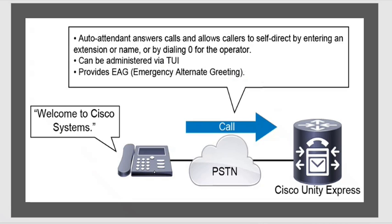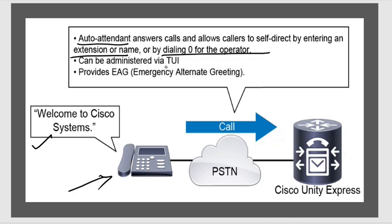A phone connected on a remote site calls Unity Express over the PSTN. Unity Express plays a greeting message, which is handled by the auto attendant. It answers the call and allows callers to select a directory by entering an extension or name, or by dialing zero for the operator. It can be administered via TUI — Telephone User Interface — and provides emergency telephony features.